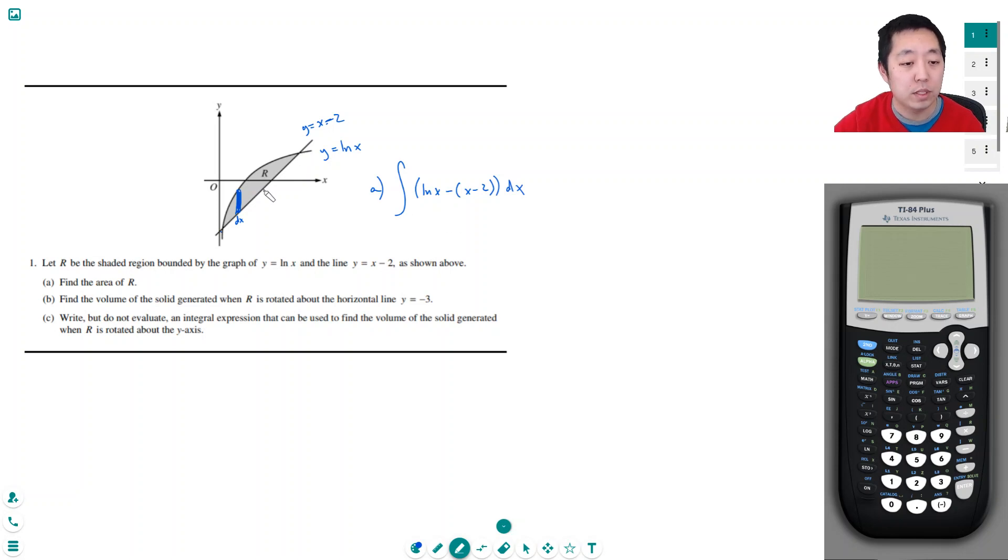That's the area of the rectangle. I want to do all the rectangles from there to there, but I don't know the bounds. The bounds are where they intersect, so ln x equals x minus 2. Here's where I'm going to need the calculator because I don't know how to solve it. First I need to find my bounds, and then once I have the bounds I'm going to compute this integral.